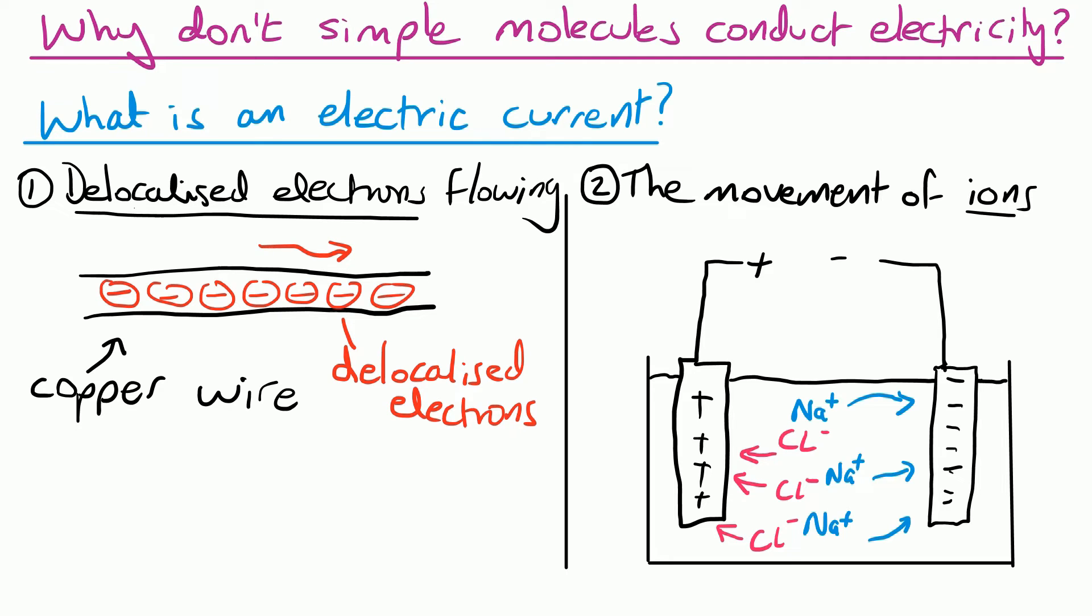Or it could be the movement of ions. So in the case here we've got maybe some molten sodium chloride and we're putting electricity through it. And all the positive sodium ions are moving to the right. And all the negative chloride ions are moving to the left. So once again we've got the flow of charged particles. So it's usually the flow of delocalized electrons or the flow of ions that are able to move.